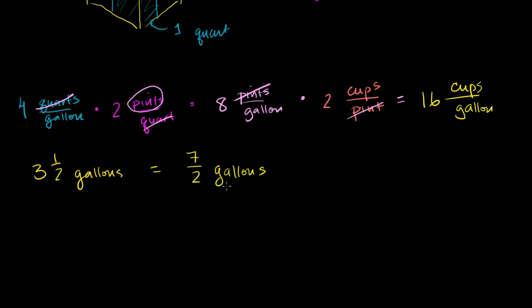We want to know how many cups are in 7 halves gallons. We want to end up with cups and want the gallons to cancel out. We have gallons in the numerator, so we want to divide by gallons and have cups in the numerator. There are 16 cups per gallon. When you multiply these two quantities, the gallons cancel out and you're left with cups.